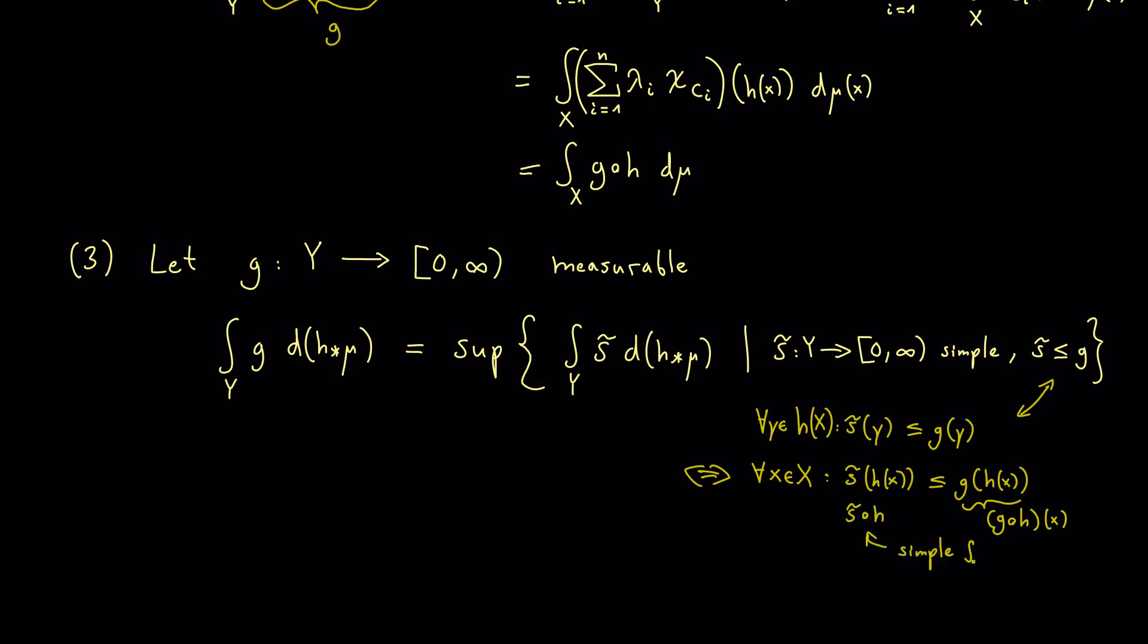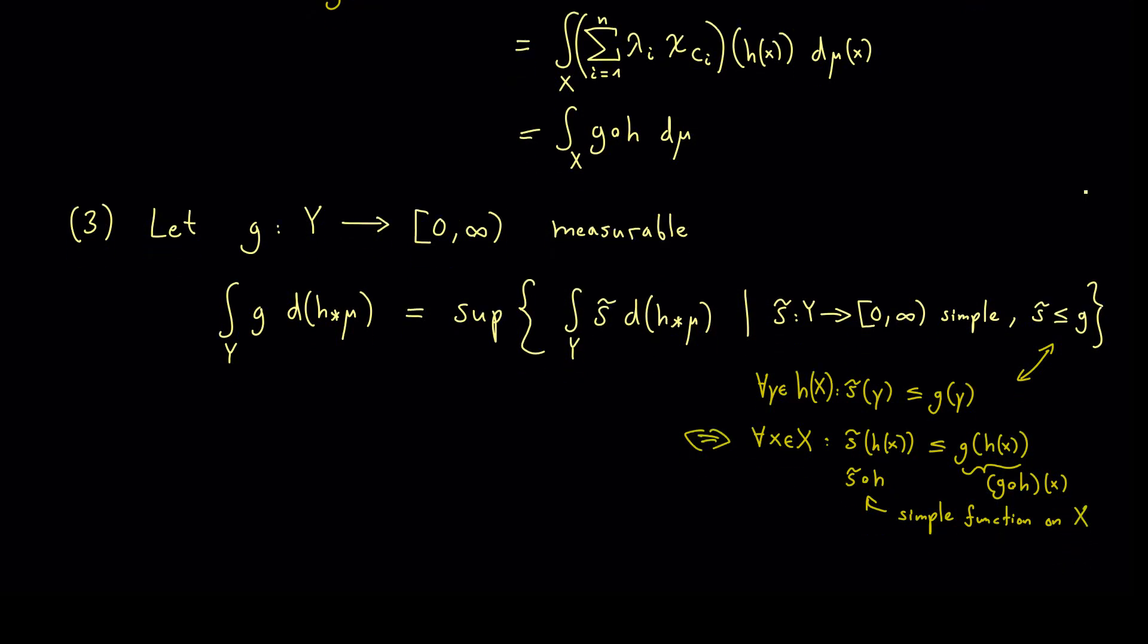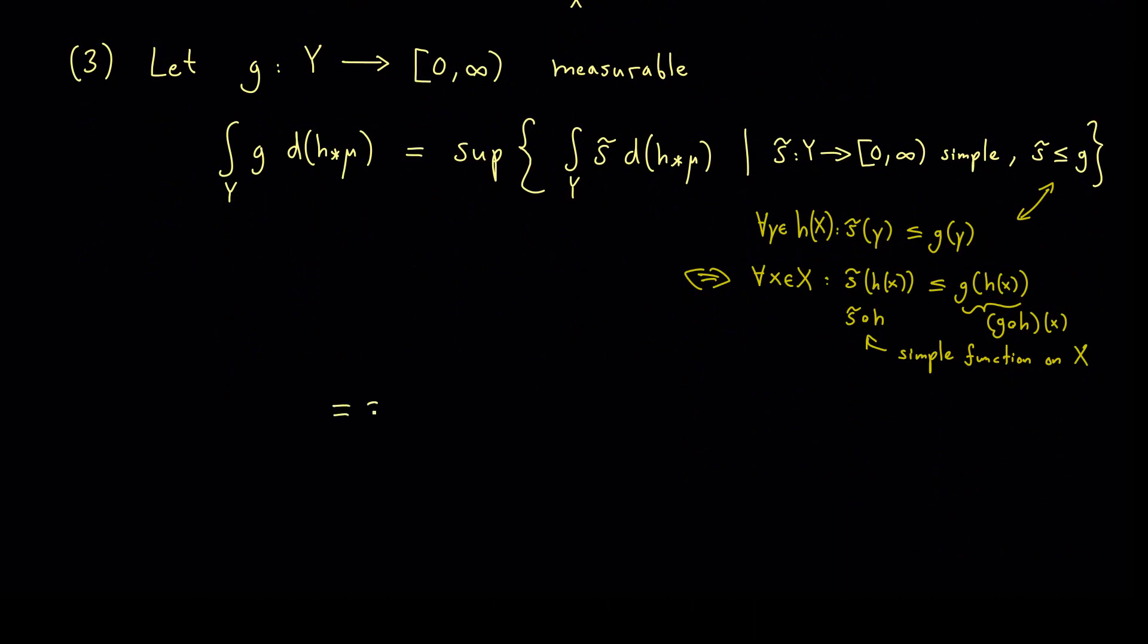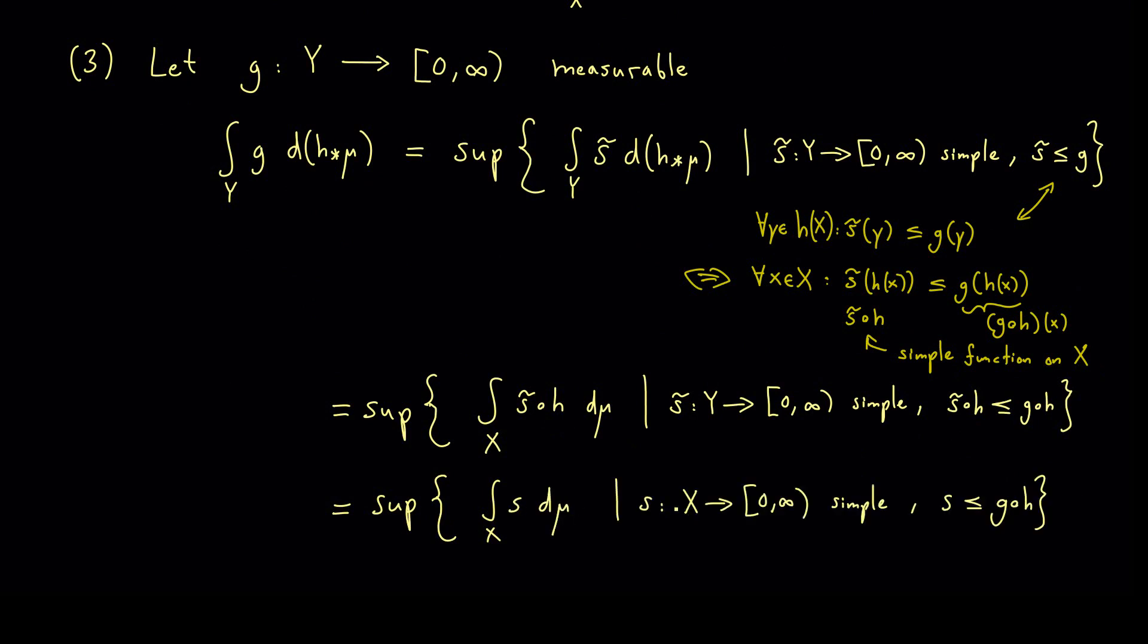This means that on the right hand side we have the function g composition with h at the point x. And on the left hand side we have the function s tilde composition with h. And now please recall the beginning of this video. Here we have shown that this is again a simple function but now on the set x. And with this we have indeed gained something. We still have the supremum here. But inside we know that the substitution rule holds for simple functions. Which means we have now the integration over x and here s tilde composition with h dmu. And behind we can now write s tilde composition with h less or equal than g composition with h. And now we can rewrite this because we know this is just a simple function on x. Hence we could call this new simple function just s.